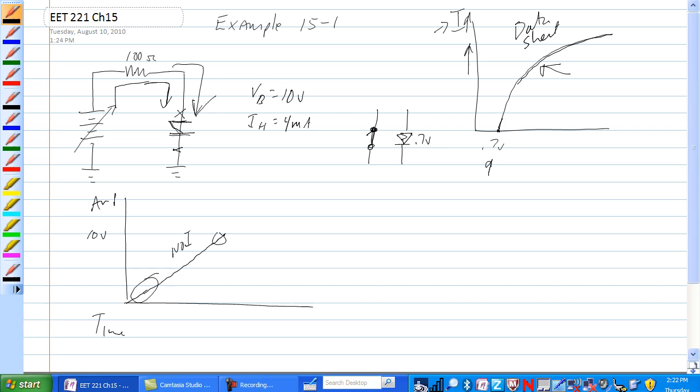But a third approximation on the datasheet would say that we have to go in here and find out how much current is going to be flowing, and then figure out how much voltage drop it is from here to here from the chart.